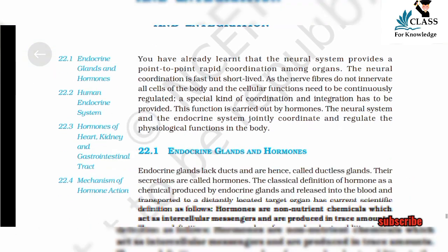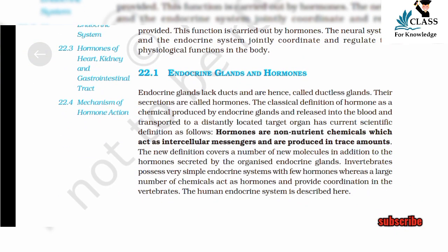22.1 Endocrine Glands and Hormones. Endocrine glands lack ducts and are hence called ductless glands. Their secretions are called hormones. The classical definition of hormone is: a chemical produced by endocrine glands, released into the blood, and transported to a distantly located target organ. The current scientific definition is: hormones are non-nutrient chemicals which act as intercellular messengers and are produced in trace amounts.